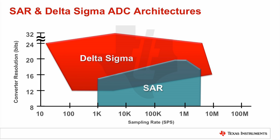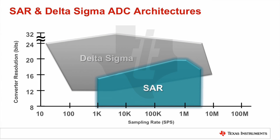In general, there is some overlap between sampling rate and resolution between SAR and Delta Sigma ADCs. SAR ADCs sampling rates typically range between 1 kS per second to around 5 mega samples per second, and resolutions up to 20 bits. Extremely low cycle latency enables very precise and deterministic sampling.